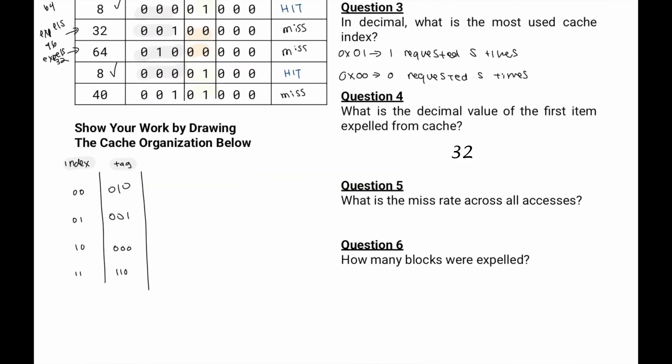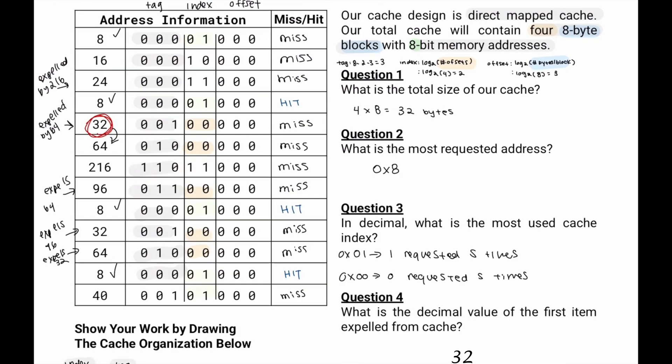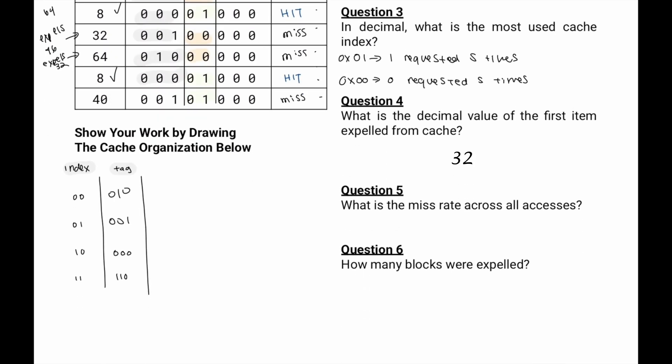What is the miss rate across all accesses? This will be just the number of misses divided by the number of total accesses. So we have three hits, and then our number of accesses is 1, 2, 3, 4, 5, 6, 7, 8, 9, 10, 11, 12, 13. So it will be 3 divided by 13.